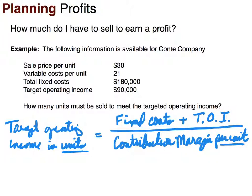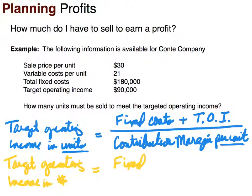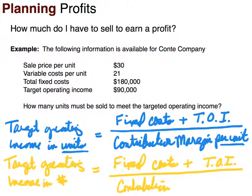If we want the target operating income in sales dollars, it's very similar to our breakeven equation. We add target operating income to our fixed costs, and divide by the contribution margin ratio, which we learned how to calculate in the prior video.